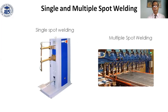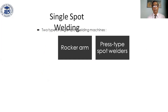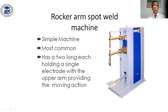Single and multiple spot welding machines: the single spot welding machine has an electrode, while the multiple spot welding machine has a paddle where pressure is given to contact the two electrodes. There are two types of single spot welding: rocker arm type and press type spot welder.